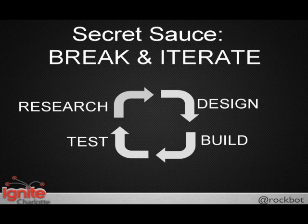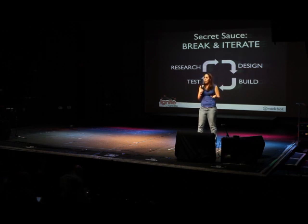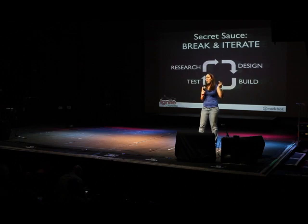In the break and iterate loop, you've done your research, your design, you've built it and tested it — but then something broke. Why did it break? Let's do some research, find out why it broke and what possible solutions we have. Now let's design the solution, build the solution, add it in, and test it again. If it's still not quite right, go through the process again — over and over. I know it sounds tedious, but this is how you make your product stronger, better, faster, and more reliable.